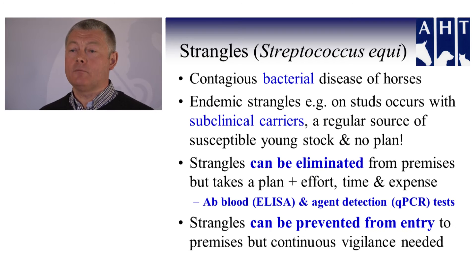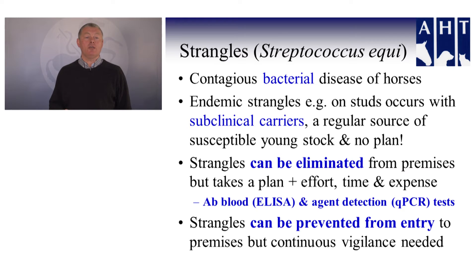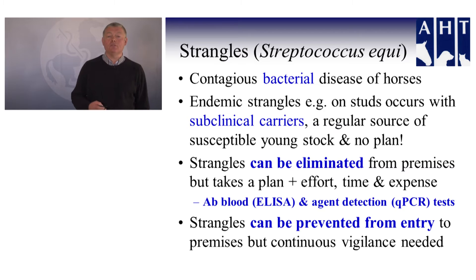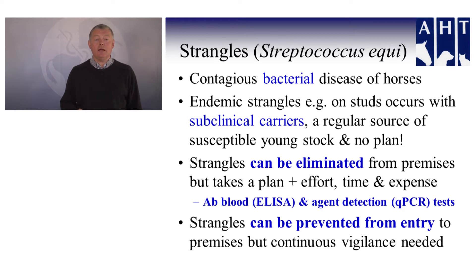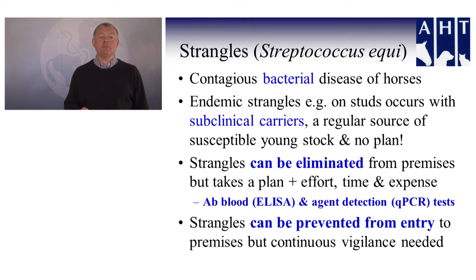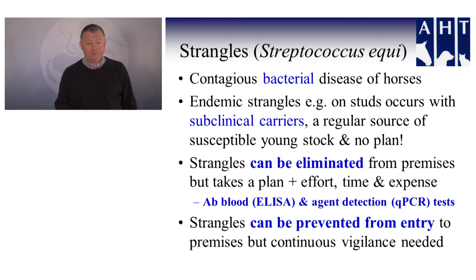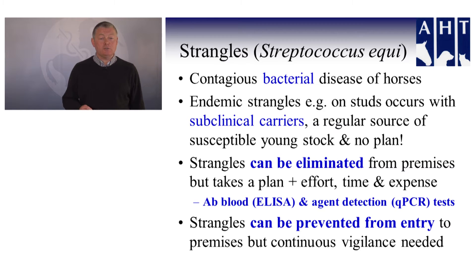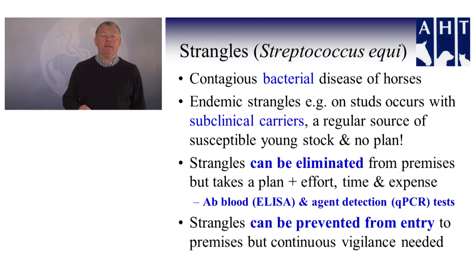Moving on to strangles, caused by the bacteria Streptococcus equi — this is a contagious bacterial disease of horses. Endemic strangles, i.e. strangles that is never completely eradicated from a premises such as on studs, can occur due to subclinical carriers. They are a regular source of infection, particularly to young stock, and if you have no plan for dealing with that, that's when you can get into problems.